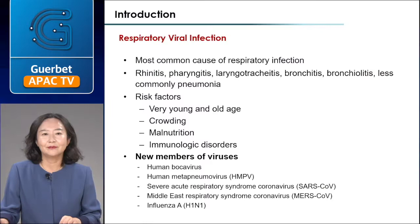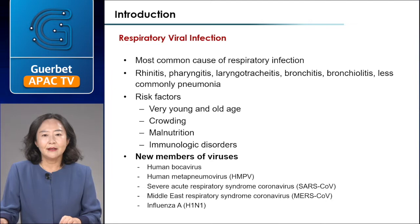Respiratory viral infection is the most common cause of respiratory infection. Symptoms of viral infection include common cold, rhinitis, pharyngitis, and can often progress to pneumonia. There are risk factors for developing viral pneumonia from upper respiratory infection. Recently, from 2000, several viral organisms have raised concern: human bocavirus, human metapneumovirus, SARS and MERS coronaviruses, and influenza H1N1 are new members of viruses which could affect pulmonary infection.